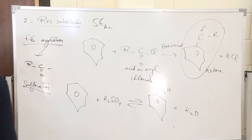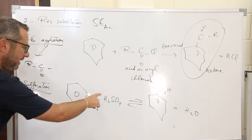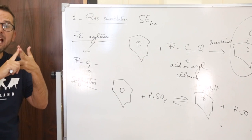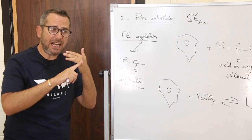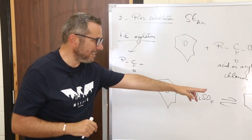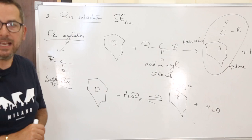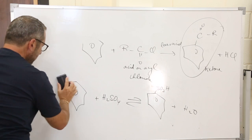Whether the reaction goes forward or backward depends on Le Chatelier's principle and how to shift the equilibrium to the right or to the left using dilute or concentrated H+. As a summary: we can substitute H of benzene by NO2 via nitration, NO via nitrosation, Cl/Br via halogenation, R via Friedel-Crafts alkylation, COR via acylation, and reversibly with H2SO4 via sulfonation. The product itself can undergo further substitutions.